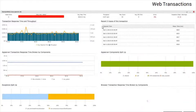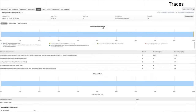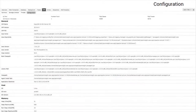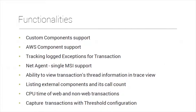Key functionalities with Site247 include custom component support and AWS component support. When an application accesses AWS services through the AWS SDK, the APM Insight agent automatically picks up those requests and starts tracking the performance of those service calls, giving detailed visibility into the time taken by each component used in your application.